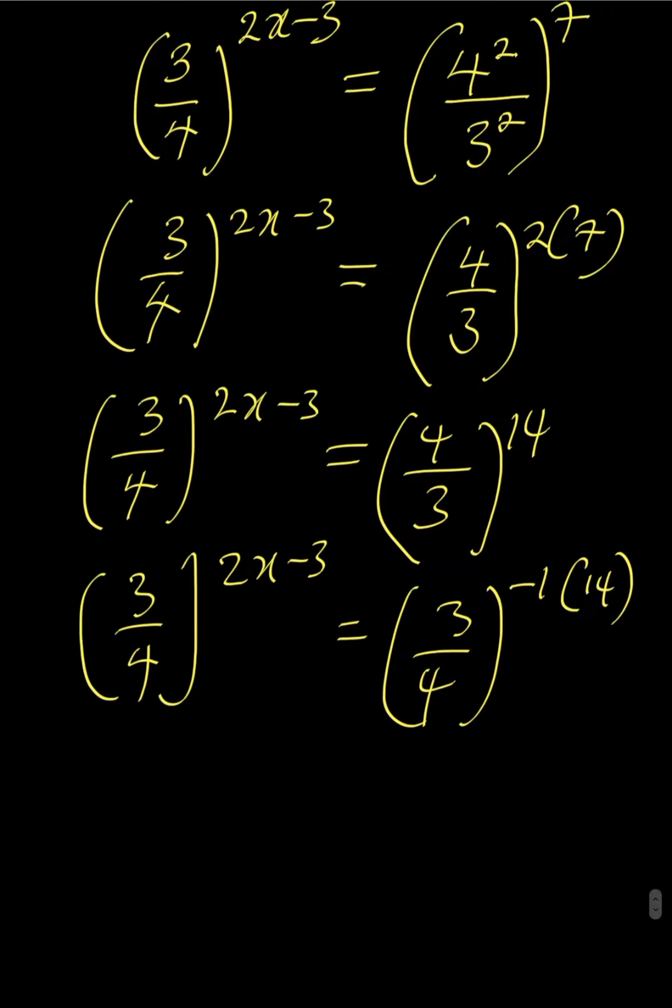That will make it turn upside down as 4 over 3 back to its original value. So we have that 3 all over 4 to the power of 2x minus 3 equals 3 over 4 to the power of minus 14.